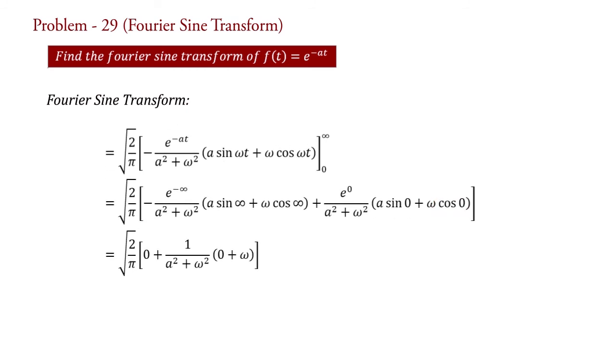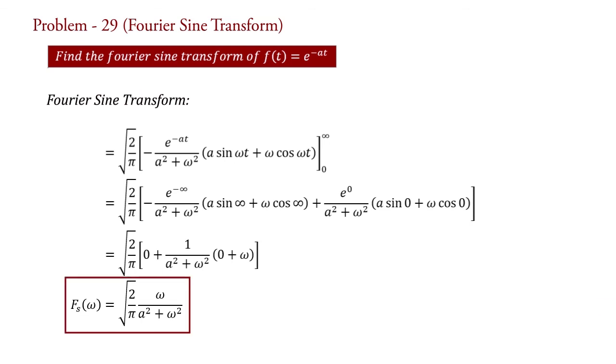By simplifying, we get Fs(omega) equal to square root of 2 upon pi, into omega upon (a squared plus omega squared). This is the Fourier sine transform of the given function. In the next video we will take one more example on Fourier transform. Please write your suggestions in the comment box, like and share this video, and subscribe to my YouTube channel School of Physics.